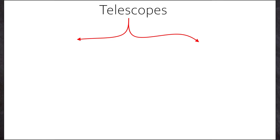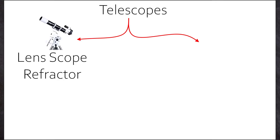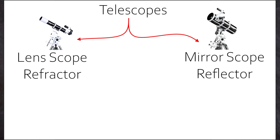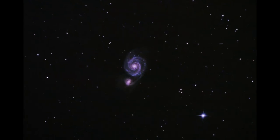We have two categories of scopes. Lens scopes called refractors and mirror scopes called reflectors. Both aim to collect lots of light from a given source so that you can see faint and distant objects.